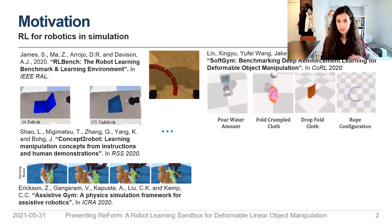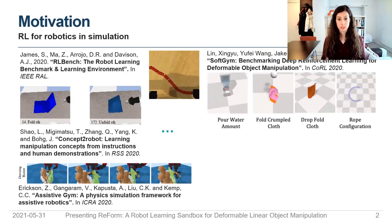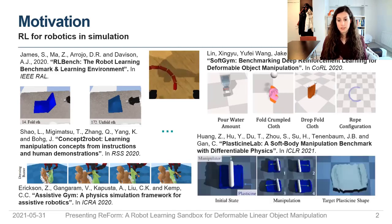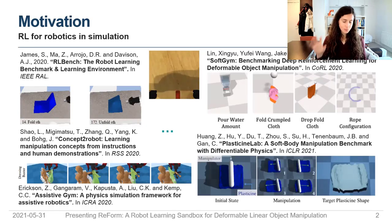More recently, there has been new work done on this. For example, SoftGym has released a benchmark on soft objects like cloth, rope, and even liquids. And PlasticineLab has provided, even more recently, a library on plasticine manipulation tasks.